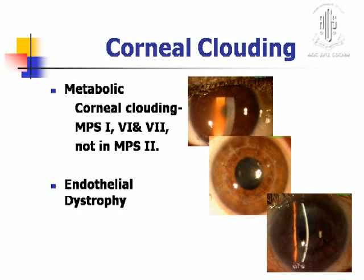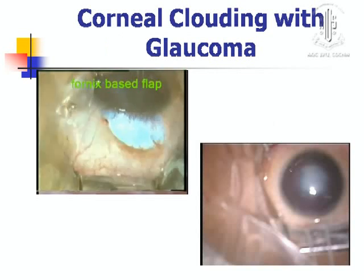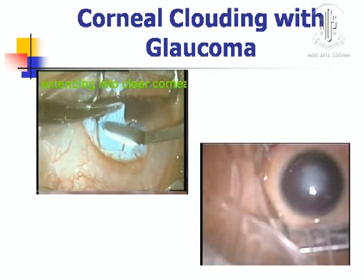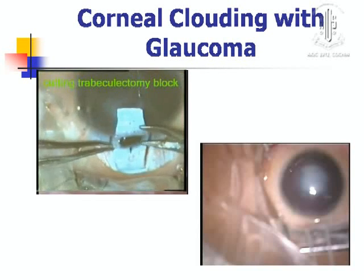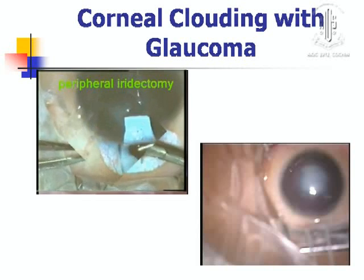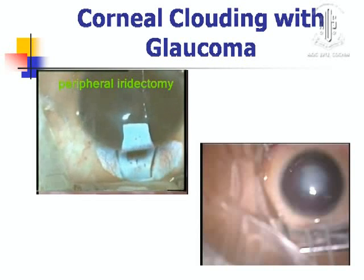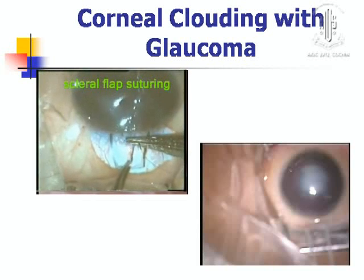Then comes corneal clouding, another part of STUMPED. Coming to the metabolic type, corneal clouding is seen in mucopolysaccharidoses 1, 6, and 7, but not in MPS 2. The second one is endothelial dystrophy, so surgery is required for that. Another problem is corneal clouding with glaucoma — in that case, first you have to take care of the glaucoma, then in the second sitting go for the keratoplasty, as seen in this video.